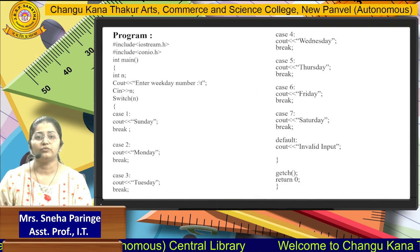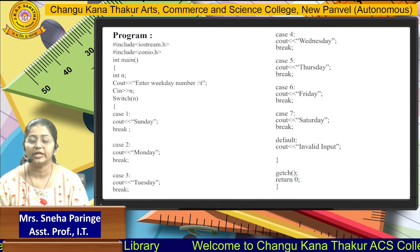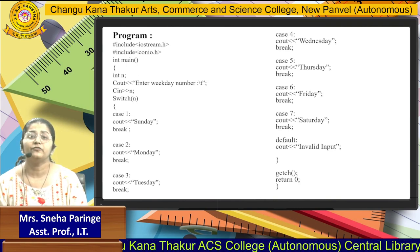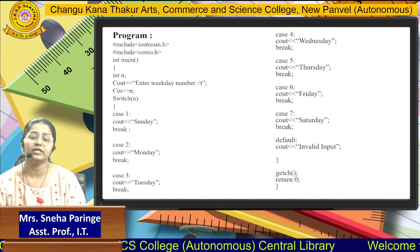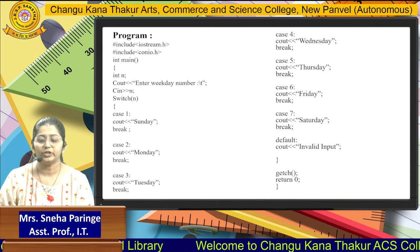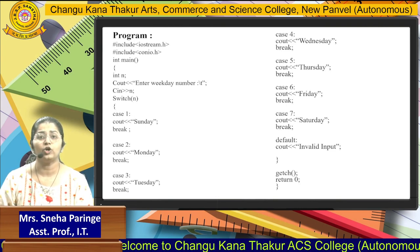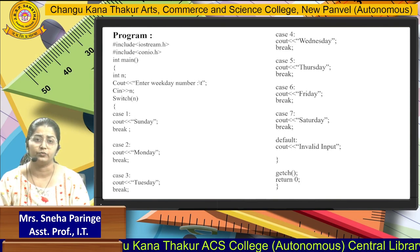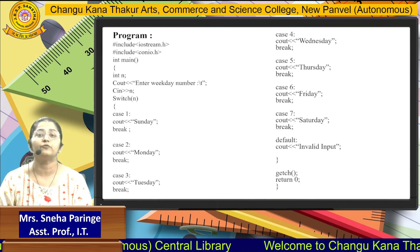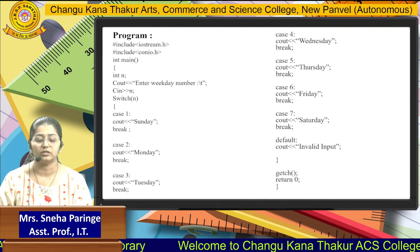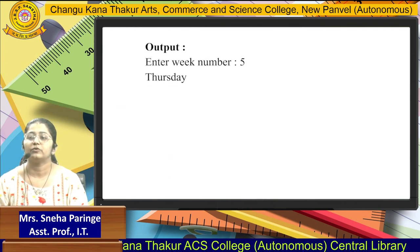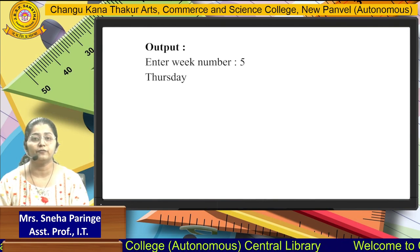Next, we will see an example of a switch case statement. Here I have taken the program to display the weekdays. First, we have to enter from the user the weekday number. Suppose the weekday number is 1, then Sunday will be printed. So case 1 is written as Sunday, and if it is matched, then it will break. Likewise, Monday, Tuesday up to Saturday. After writing all the cases, we write the default statement — invalid input. If the user enters number 8, it will not match any of the cases and will print the default statement, invalid input. Suppose the user enters number 3, then Tuesday will be printed, and if 5 is entered, then Thursday will be printed.